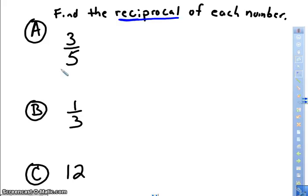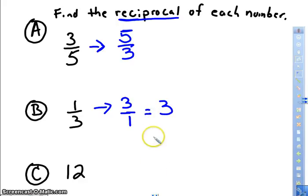So we're going to find the reciprocal of each number. The reciprocal of 3/5 would be, if I flip it over, I get 5 over 3. That's my reciprocal of my number. The reciprocal of 1/3 is 3 over 1, and we know 3 over 1 is the same as just plain 3. The reciprocal of 12. Now remember, 12 is the same thing as 12 over 1. So when I flip that upside down, I get 1/12.